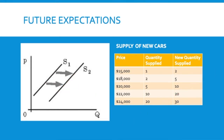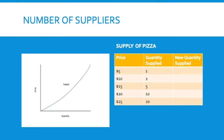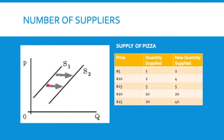Another thing that can impact supply is the number of suppliers. Back to the pizza example: if I'm a pizza shop and all of a sudden another pizza shop opens across the street, naturally there's going to be more pizza supplied because the number of suppliers has gone up. New people enter the market because they see others making money — they say, 'I want to make a profit too.' So the number of suppliers goes up, causing an increase in supply, and the line shifts to the right. The opposite is true if pizza places go out of business — the overall supply in the market would go down.